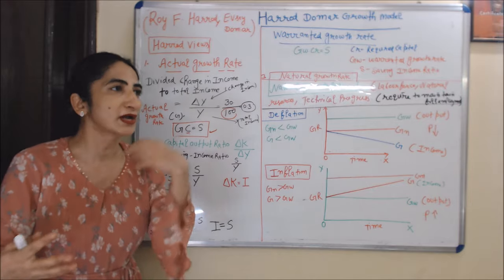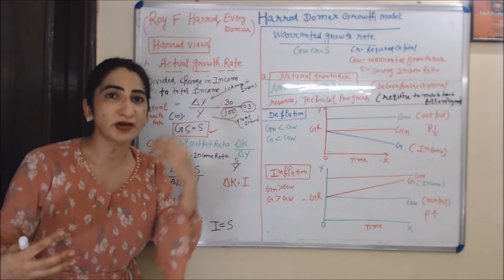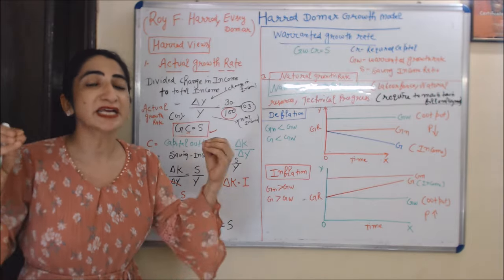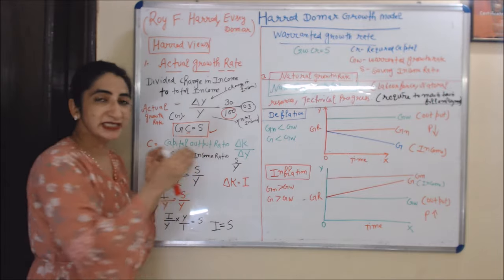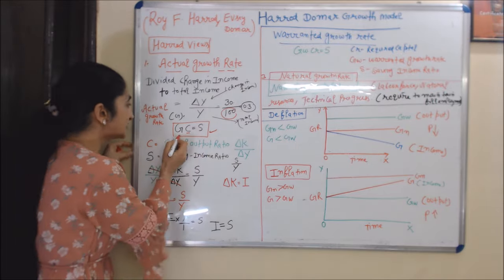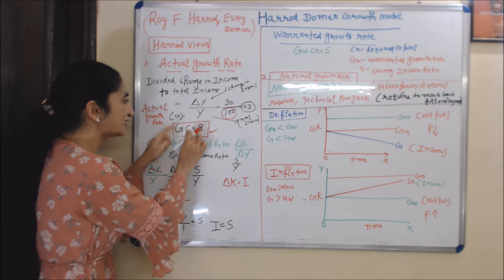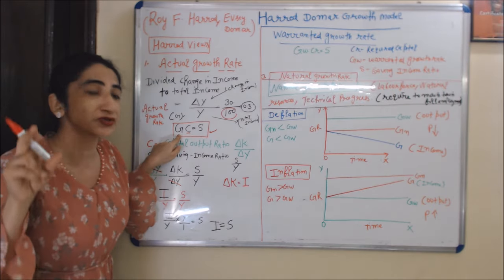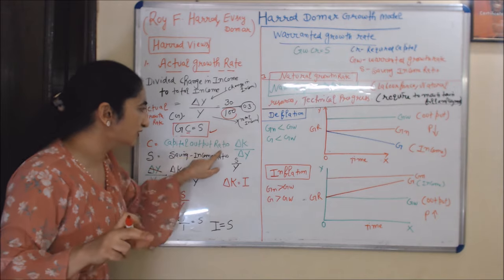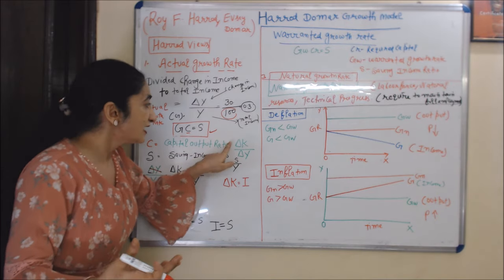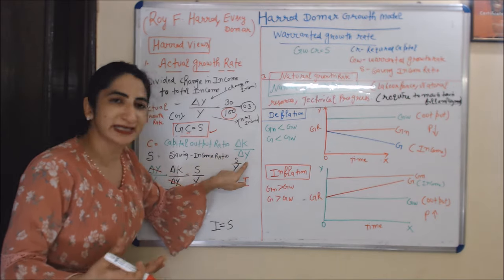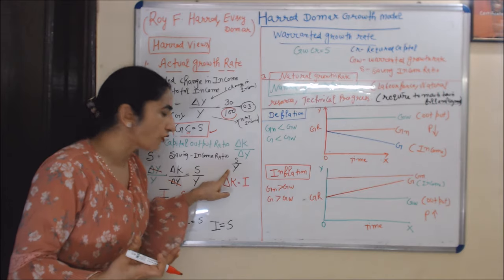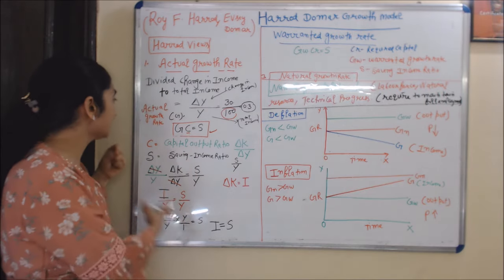Harrod says that for stability in an economy, or for getting an equilibrium situation, investment must equal saving. To understand this, we study the equation: G multiplied by C equals S. In this equation, G is the actual growth rate, C is the capital-output ratio written as ΔK over ΔY, and S is the saving-income ratio written as S over Y.